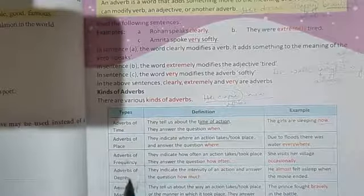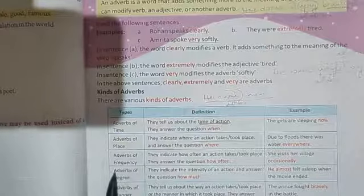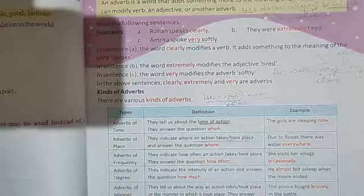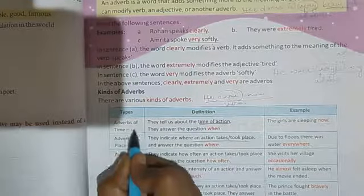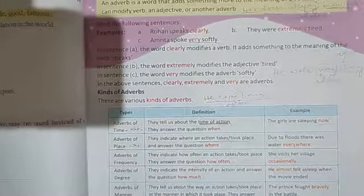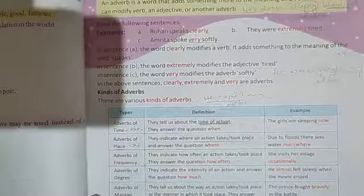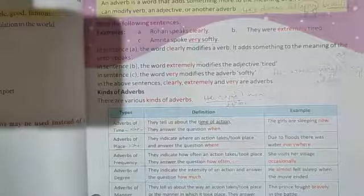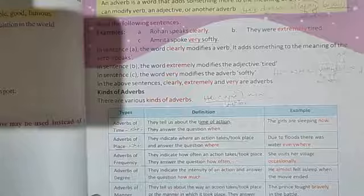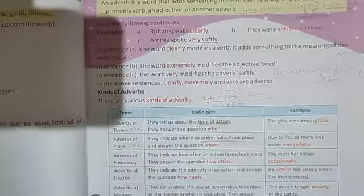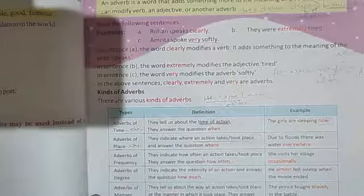Adverb of frequency. Frequency means how often. How many times? Answers the question. How often? Adverb of time answers the question when. Place, where. Frequency, how many times? For example, if I say, he never visits his relatives. He never visits his relatives. How often? Never. Not a single time.